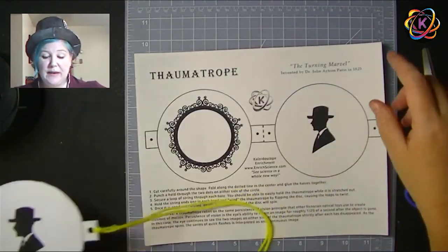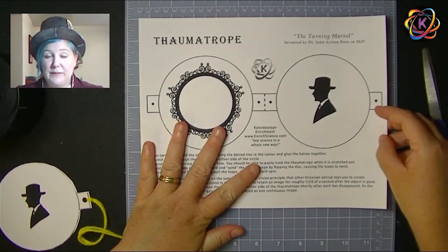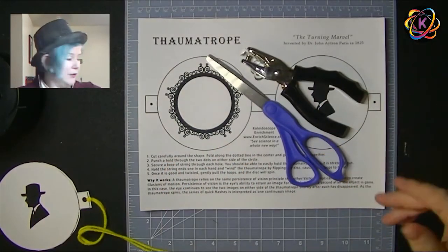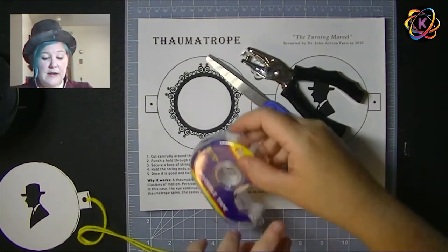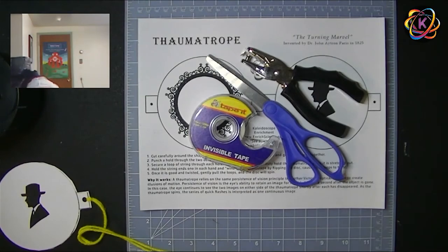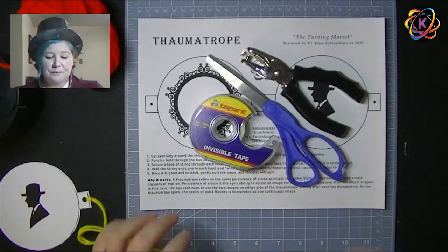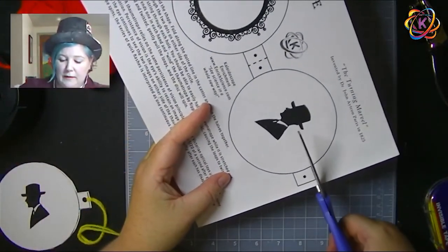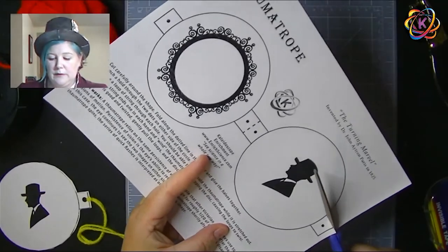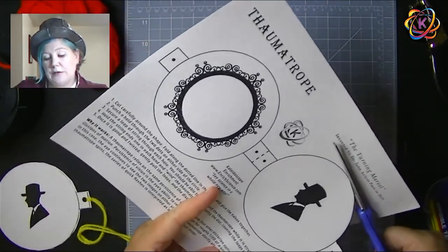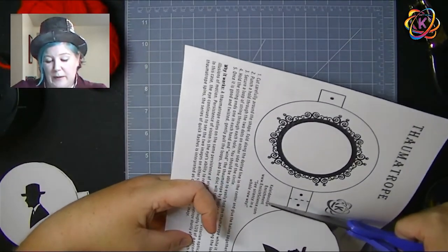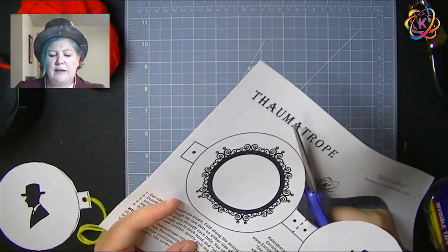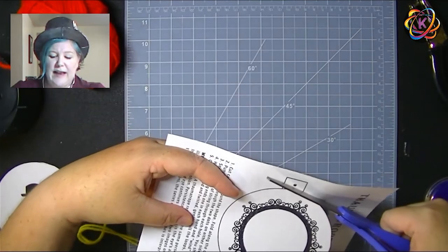I'm going to show you how to make a simple thaumatrope. This is the template you can get from my website, and I'll also put it on the event page. All you're going to need is this template, a pair of scissors, a hole punch or a pencil to poke a hole, a bit of tape, and some string or yarn. I printed this on heavier cardstock paper, so if you're printing on regular copy paper, you might want to glue it onto a cereal box or a file folder just to give it a little extra weight. It works a little better and lasts a little longer that way.